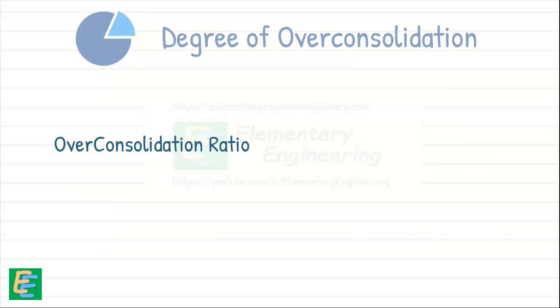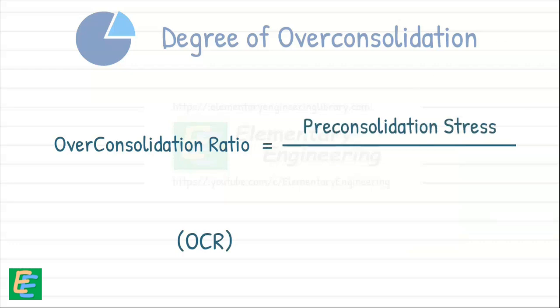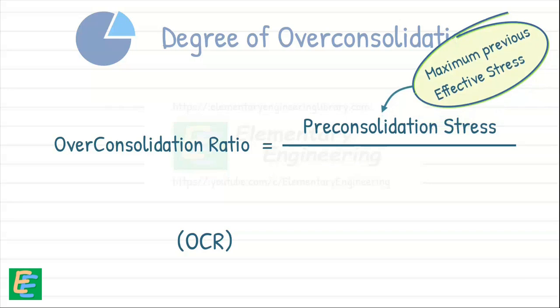The overconsolidation ratio, also called OCR, is defined as the ratio of pre-consolidation stress—that is the maximum value of effective stress the soil has ever experienced—to the present effective stress.